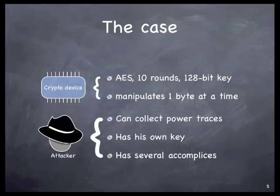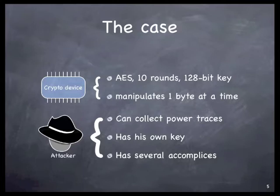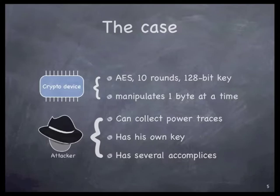On the other hand, we have the attacker. The attacker is not able to set chosen keys while using the crypto device, but he is able to collect power traces while different people use this device. He has his own key that he knows — one known value for one key. And he has several friends that also have known keys and are willing to share their values in order to build the model for this attack. This is the scenario we are going to use.